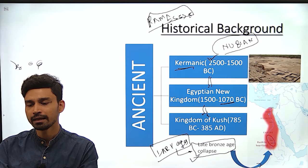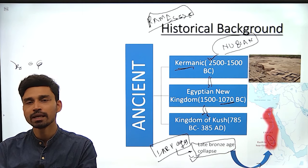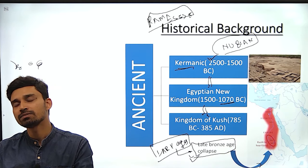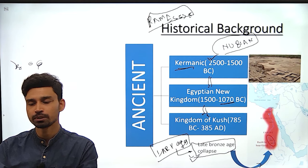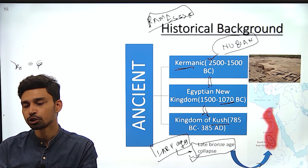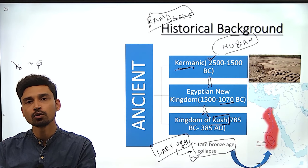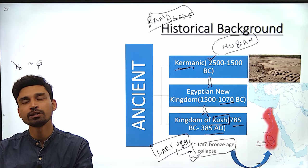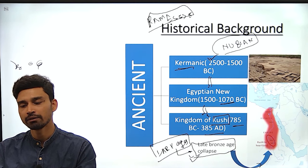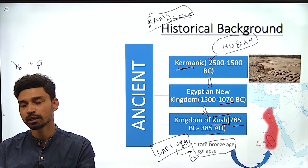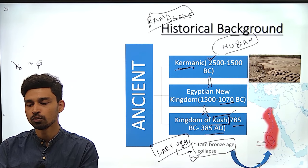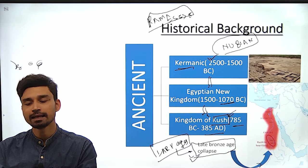Due to the Late Bronze Age Collapse, we can see a weakening of the Egyptian New Kingdom. Taking advantage of this weakening, the Kingdom of Kush took control of Sudan and ruled for somewhere between 785 BC to 385 AD — almost a thousand years.